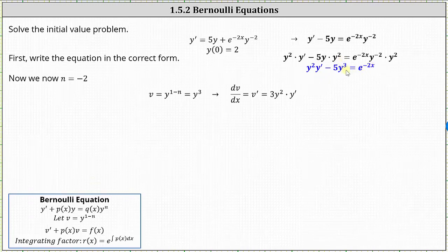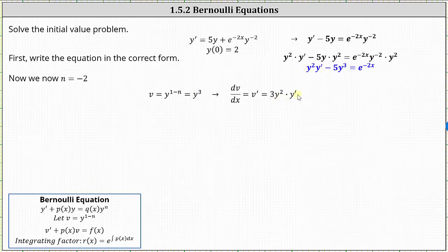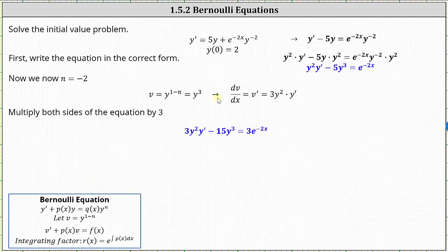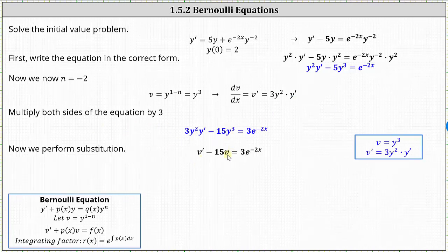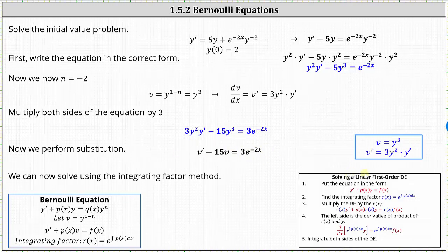Notice the second term has y cubed, which is what we said v is equal to. The next step is to find v prime by differentiating both sides with respect to x, which gives us v prime equals 3y squared times y prime. The first term in our differential equation is y squared y prime, so we can multiply both sides of the differential equation by three to get a perfect substitution. Multiplying both sides by three, we have 3y squared y prime minus 15y cubed equals 3e to the power of negative 2x. Performing substitution, 3y squared y prime is v prime and y cubed is equal to v. Now we have a first order linear differential equation, which we can solve using an integrating factor.